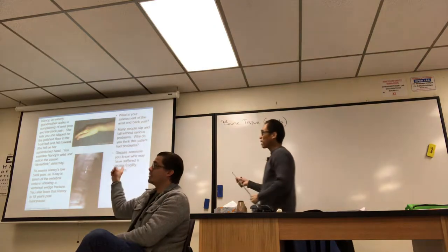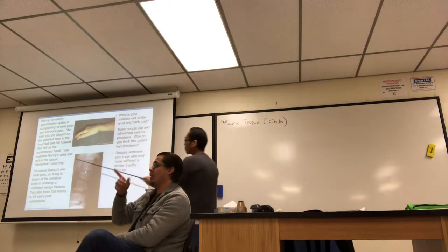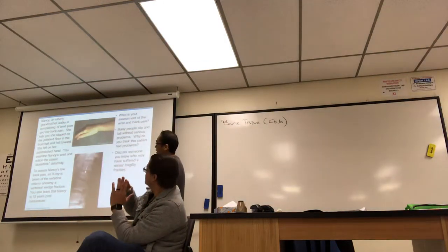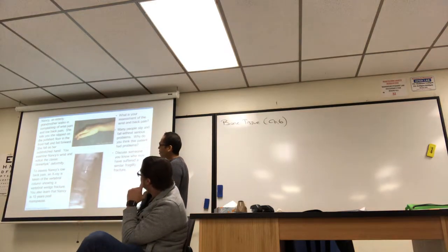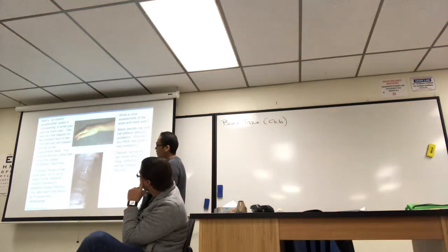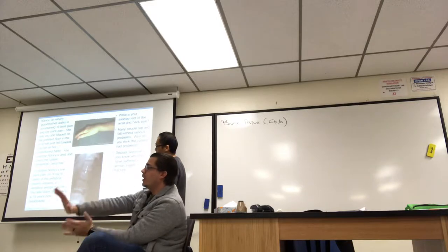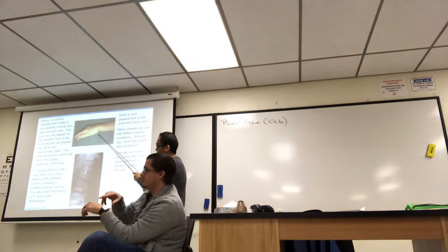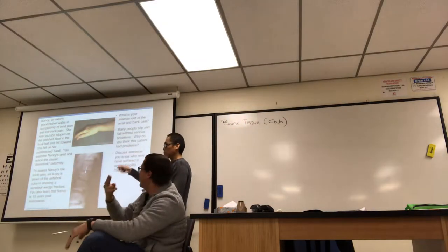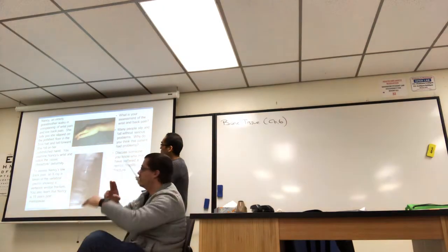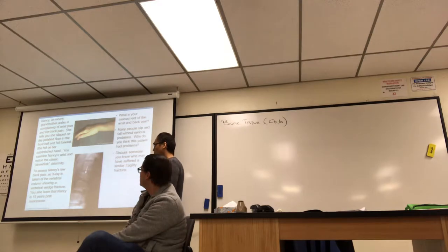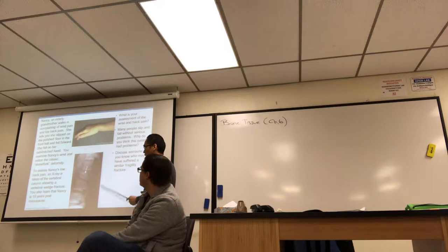In this one, an elderly grandmother Nancy walks in complaining of wrist pain. She tells you she slipped on the polished floor in the hall and fell forward. She fell on her outstretched hand. You examine Nancy's wrist and notice the classic dinner fork deformity. To assess Nancy's low back pain, an X-ray is taken on the vertebral column showing a vertebral wedge fracture.